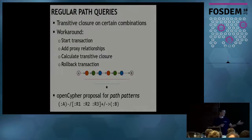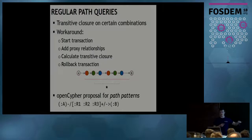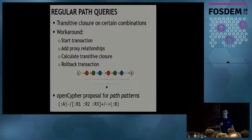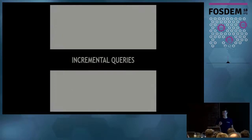The Cypher team is well aware of this limitation. For the next OpenCypher, there's a proposal for creating path patterns — allowing users to express several relationship types next to each other and perform a transitive closure-style operation on them.